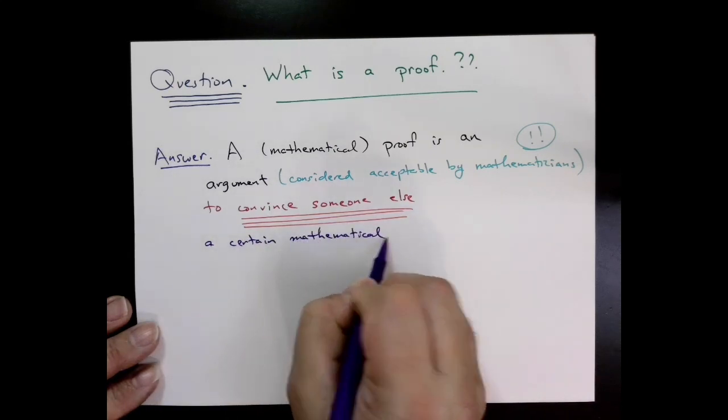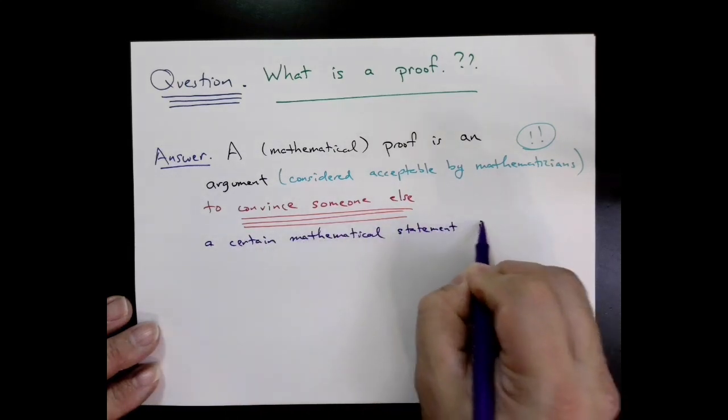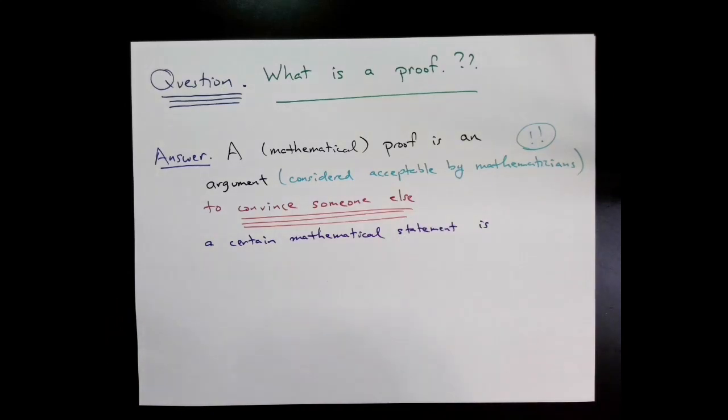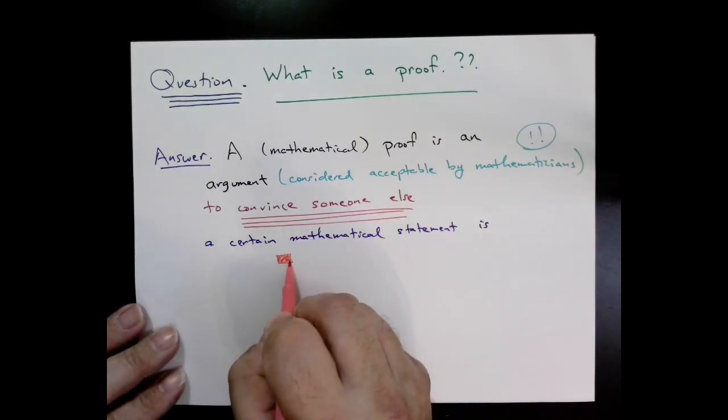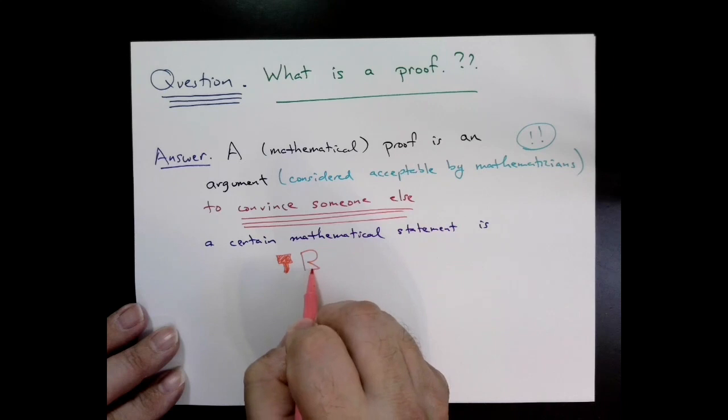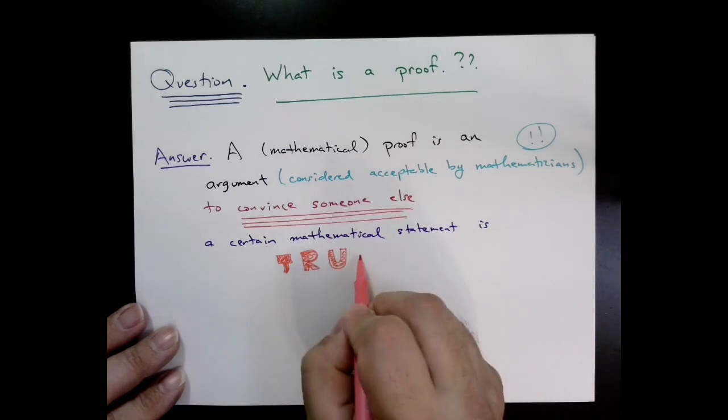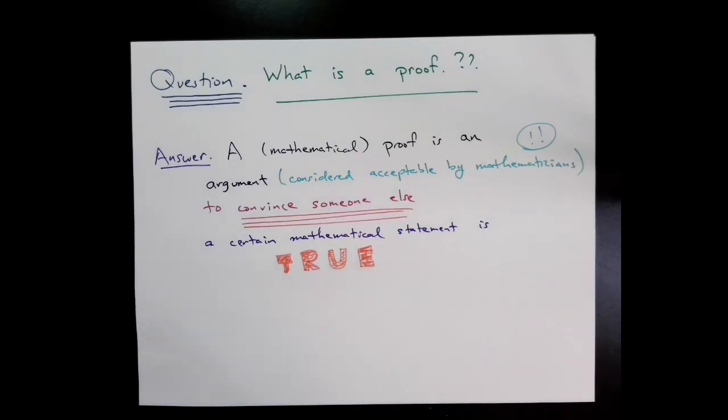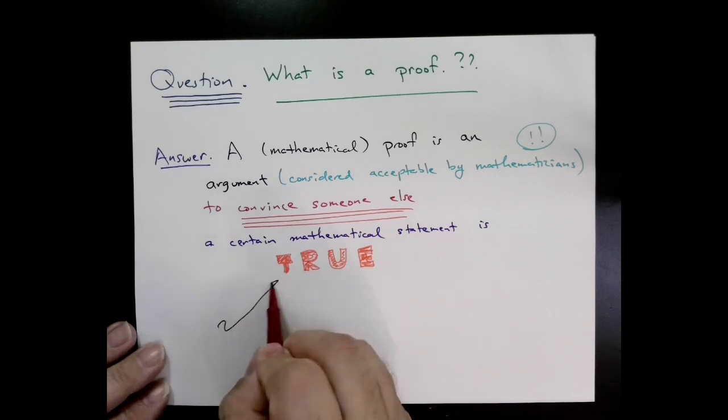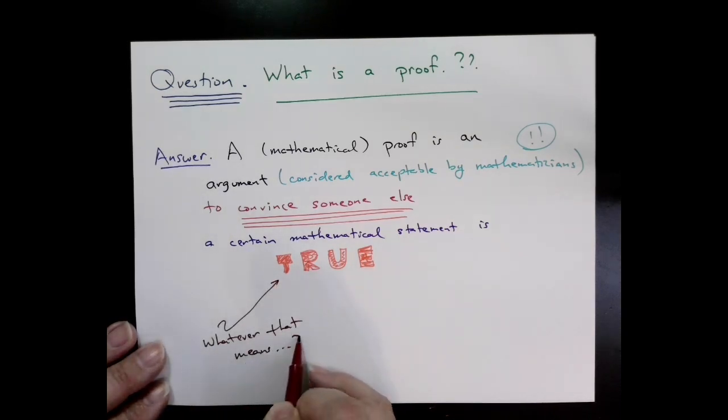The other thing I really want to point out is that a proof is an argument designed to convince someone else that a statement is true. So by its nature, mathematics is a social activity. It doesn't exist in the real world in any strong sense—it only exists in our heads. The only way that we can actually do mathematics is to convince other people that something we've proven is true.